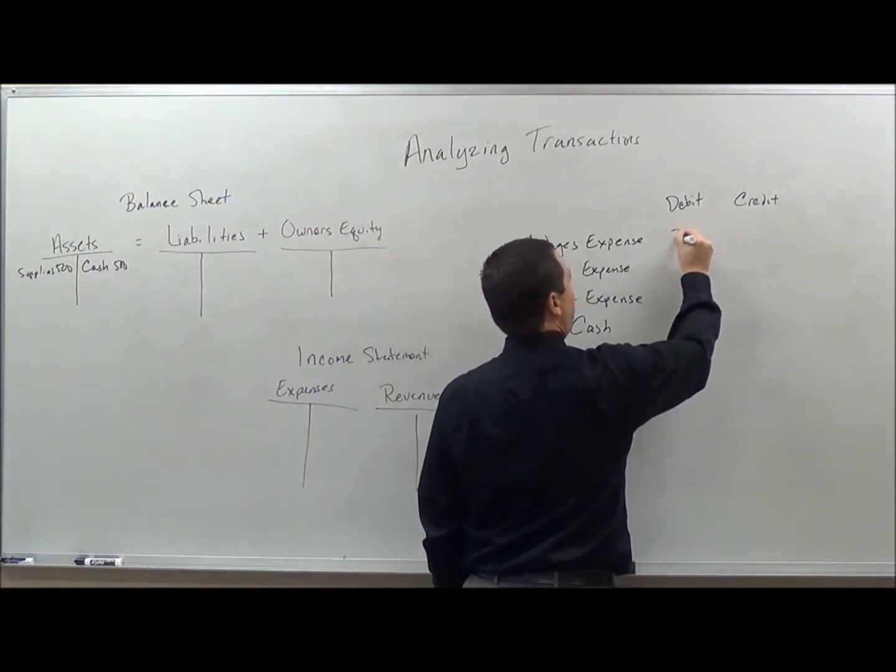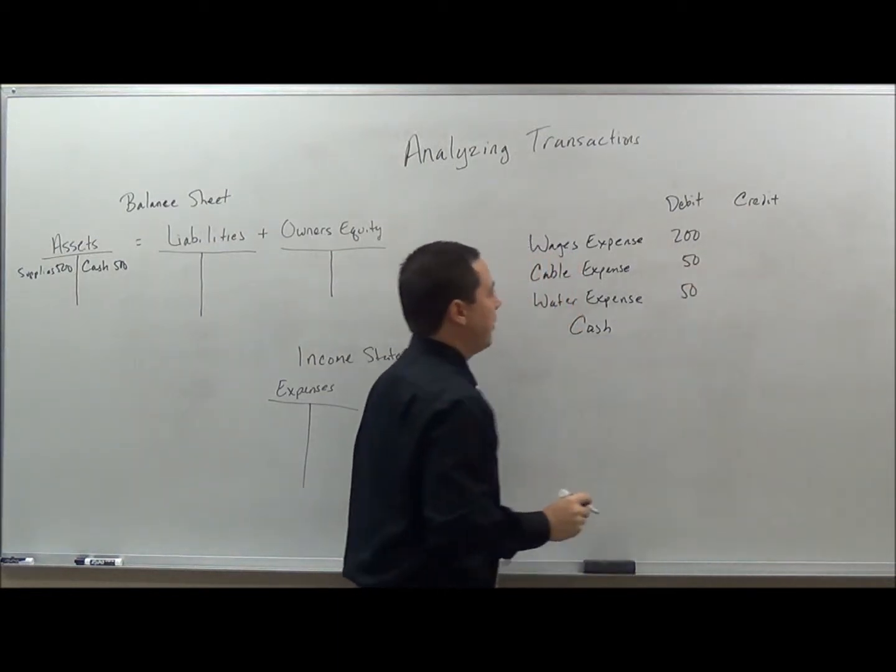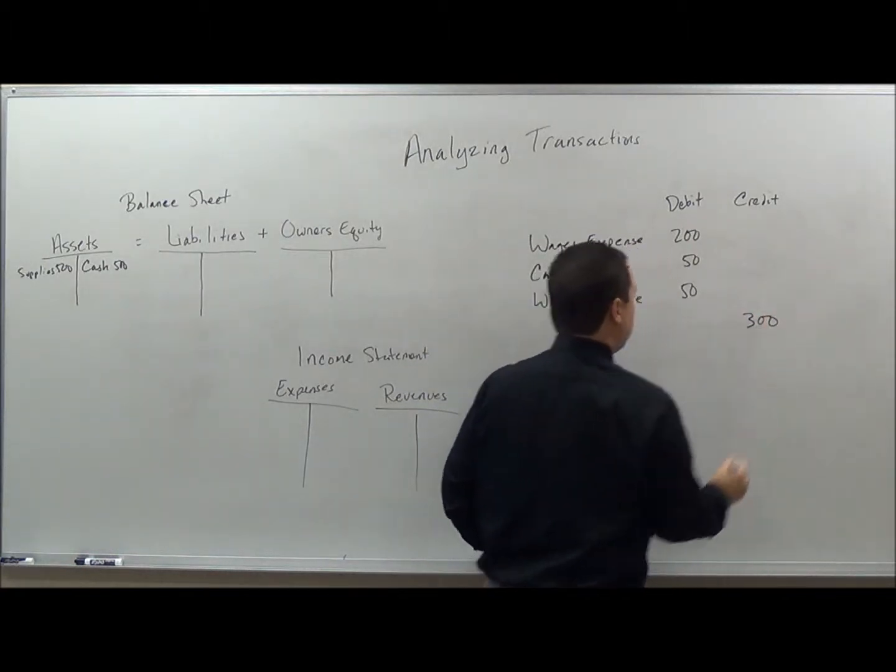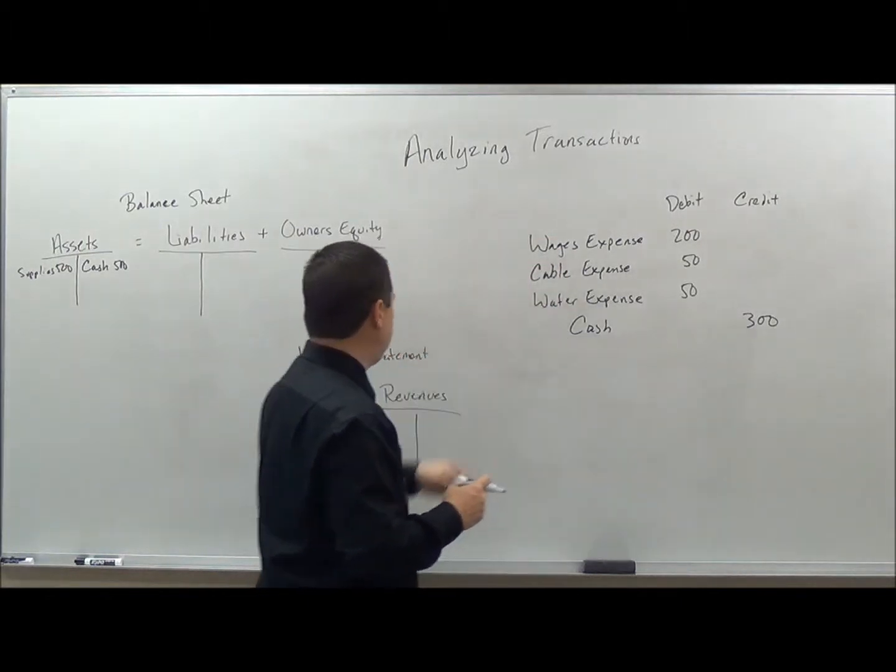So I may have $200 for wages, $50 for cable and $50 for water. If I total all those up, that equals $300. So I have $300 in cash outlay here and then I have these expenses.